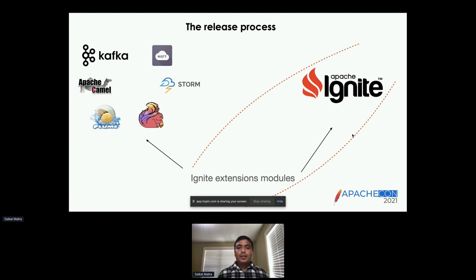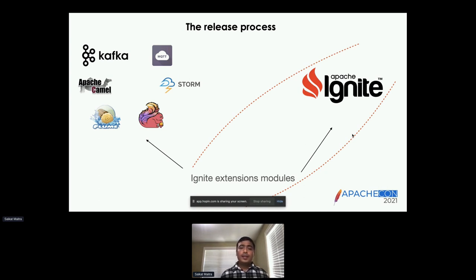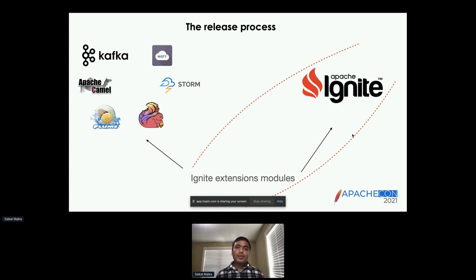This created a challenge where each of those extensions, whether they were getting changed or not, were still being released as part of Apache Ignite core. That means we had to go and update the build file, verify those extension modules, and test them to see if they were compatible with the latest Apache Ignite core before going forward with the release. This added additional overhead for the release manager, and the release cycle took longer because each extension needed to be validated.